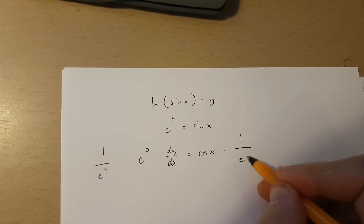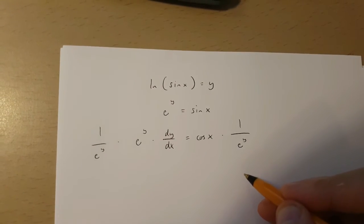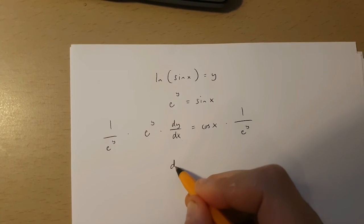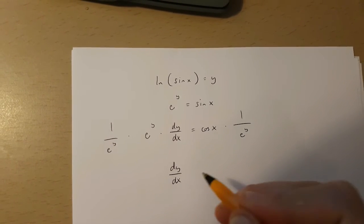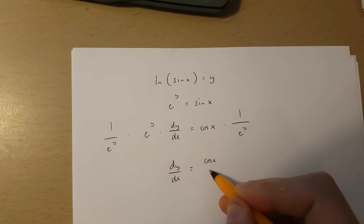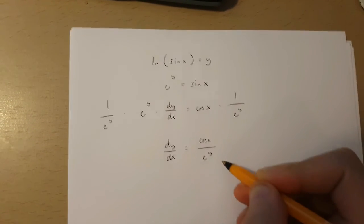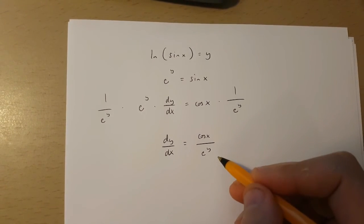1 over e to the power of y. If I do this I get dy over dx is cos x over e to the power of y. Now